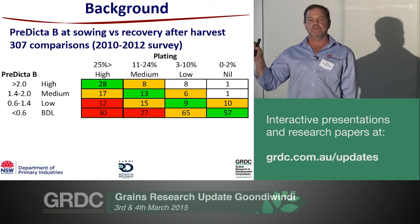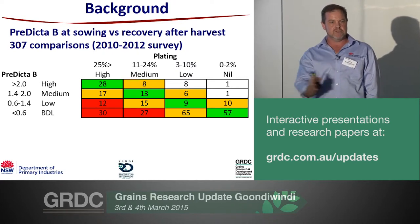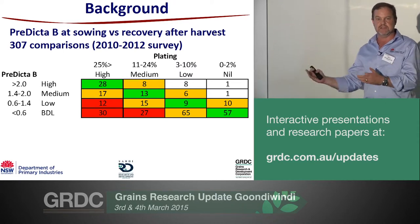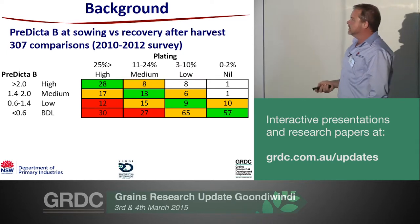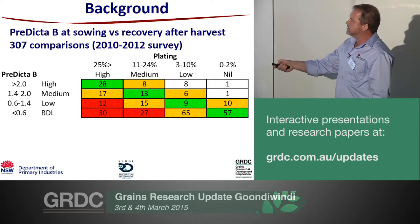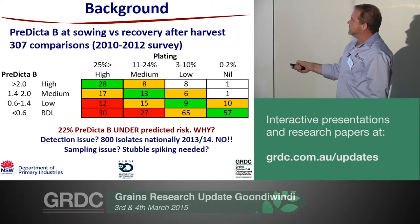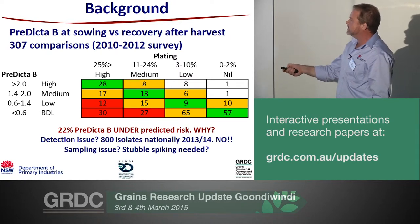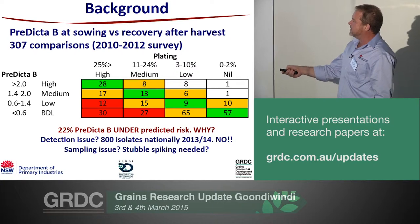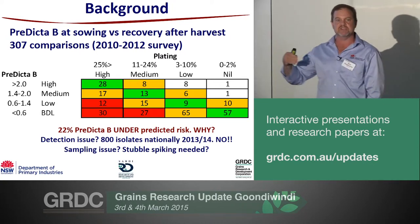Predictor B is never going to tell you what yield loss you're going to get in a paddock — it can only ever predict the number of plants that get infected. The yield loss is a factor of the number of plants infected at the end of the season. Of the 370 paddocks, 78% of the time results lined up correctly. The concern — highlighted in red — is that we had 22% of paddocks where Predictor B said low or below detection, but when we plated, 11-25% or more of the plants were actually infected with crown rot.